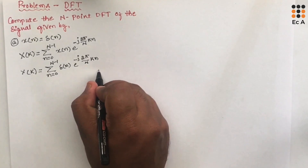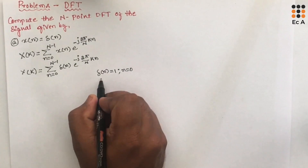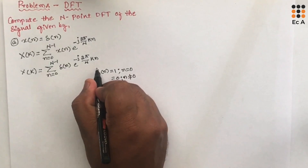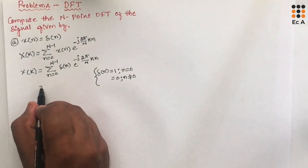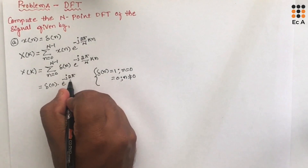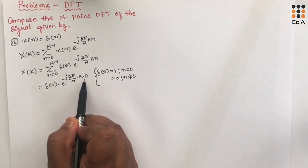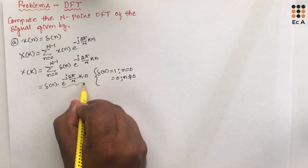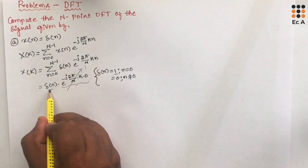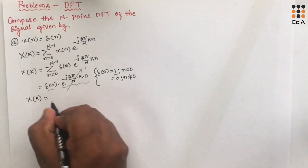We know the delta function: δ(n) = 1 for n=0, and δ(n) = 0 for n≠0. Using this, we substitute n=0 and get δ(0) · e^(-j2πk·0/N). This term equals 1 because e^0 = 1, and δ(0) = 1. So we get the DFT of the given signal as X(k) = 1.